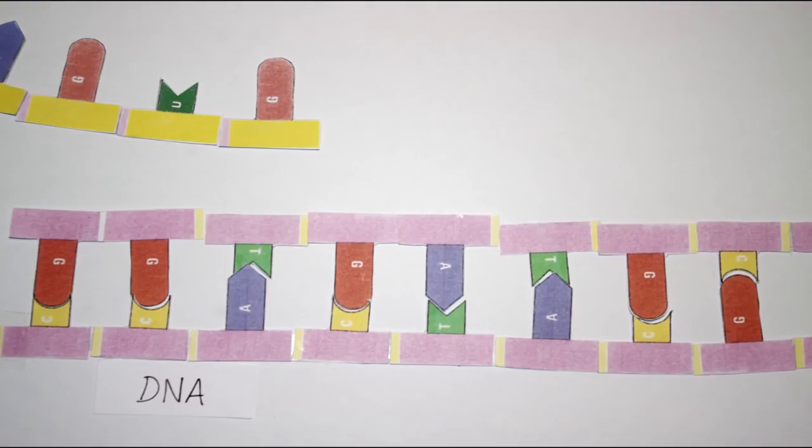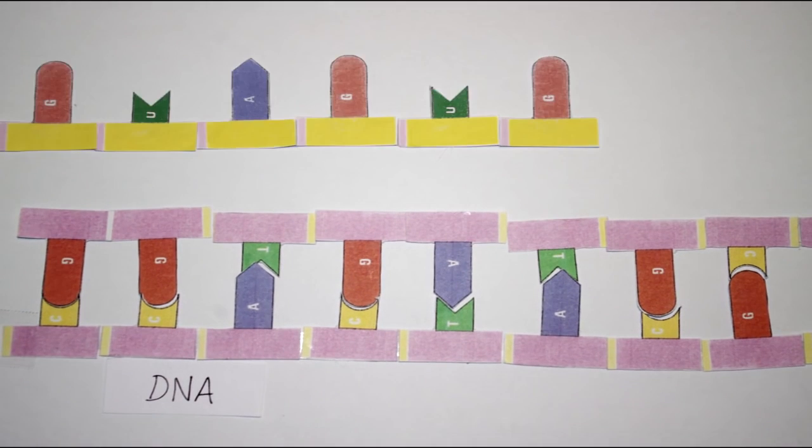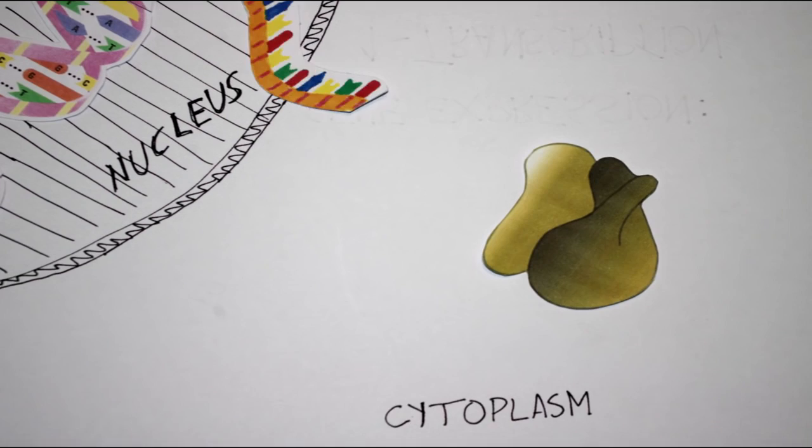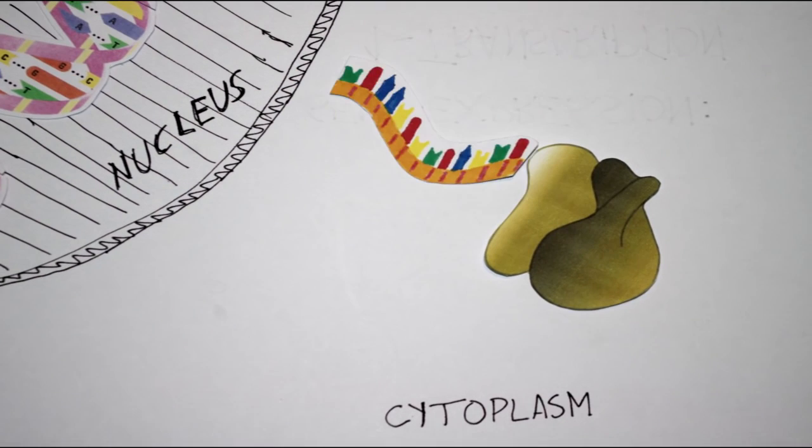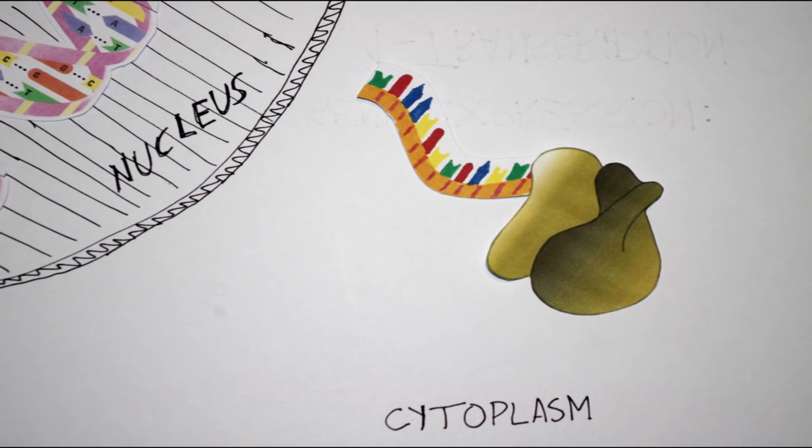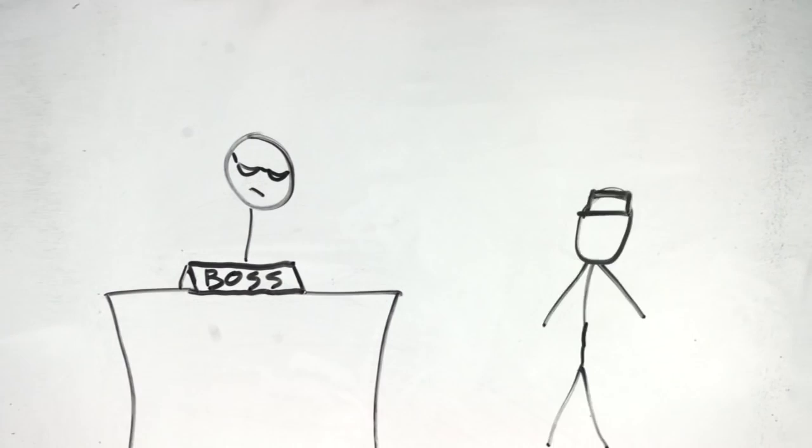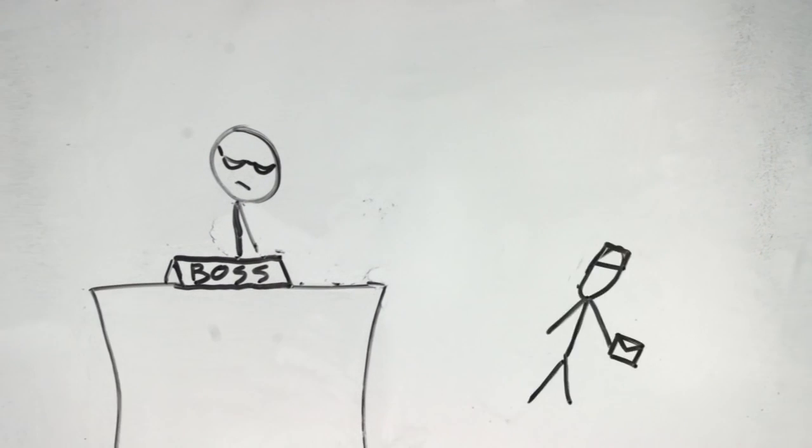The result is a type of RNA that we call messenger RNA, mRNA for short. After the transcription, it travels to the cytoplasm, where phase 2 takes place. It's like a boss handing in a message to an errand boy, who has to take it to another department of the company.